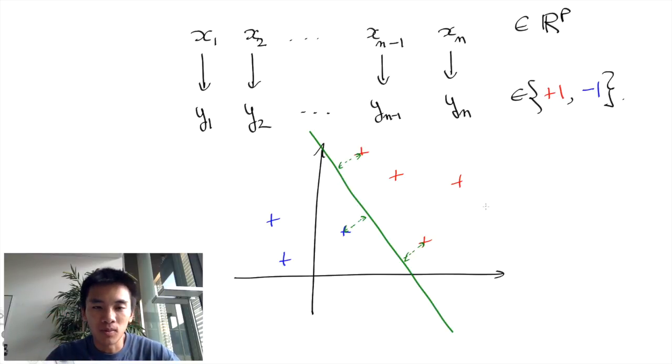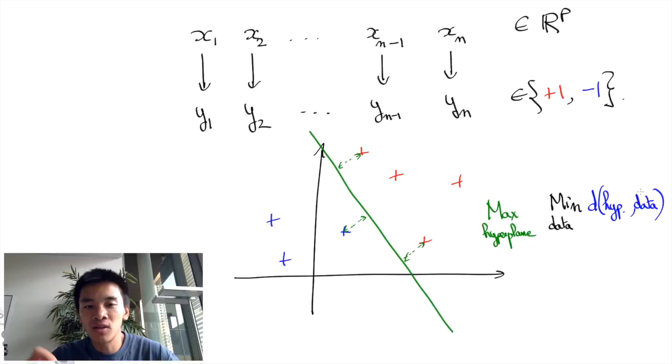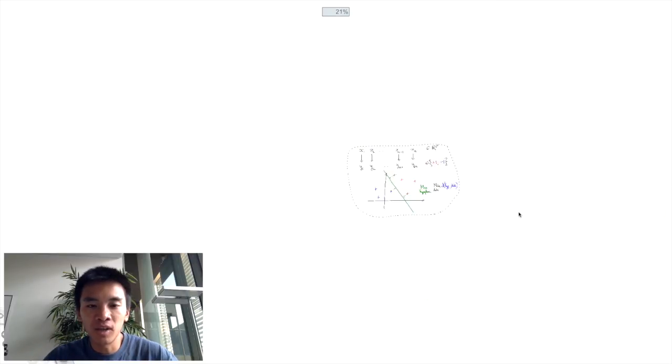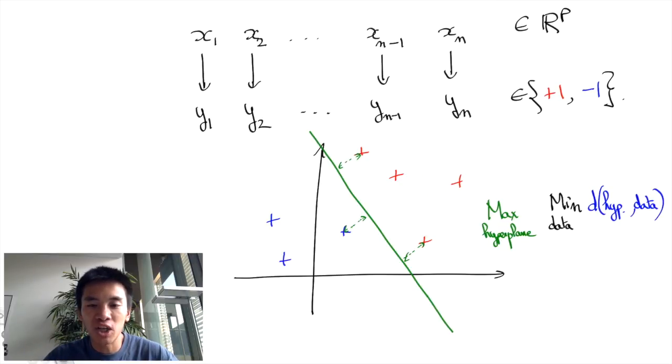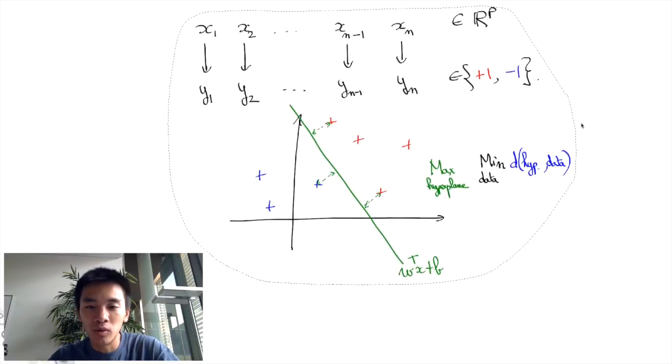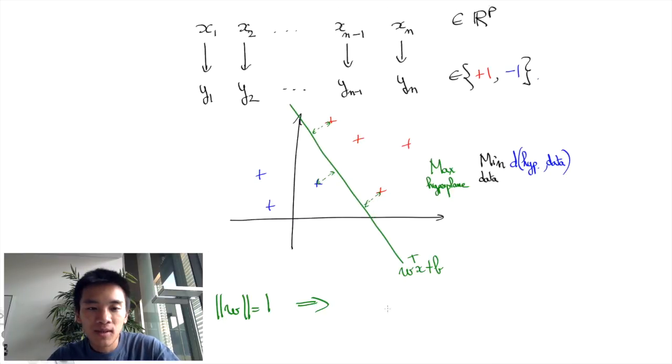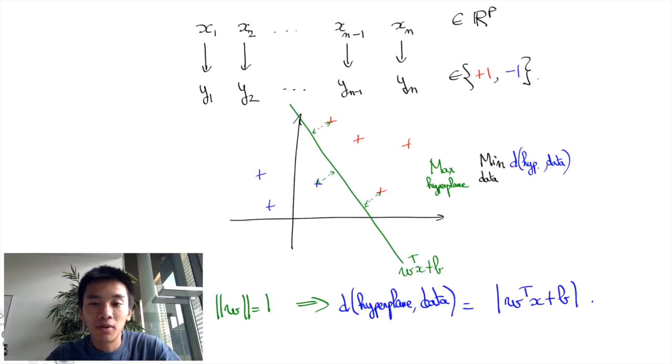In mathematical terms we shall compute the hyperplane which maximizes the minimal distance between the hyperplane and the data points. Note that if an equation of the hyperplane is W transpose X plus B with a Euclidean norm for W equals to 1, then this distance between XI and the hyperplane will be exactly W transpose XI plus B.